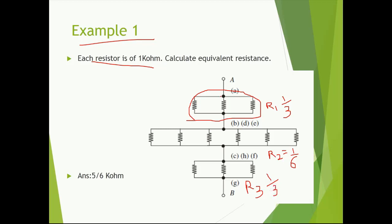Now this equivalent resistor is in series with this equivalent resistor, which is in series with this equivalent resistor — that is, R1 is in series with R2 is in series with R3. That is 1 over 3 plus 1 over 6 plus 1 over 3, so the answer comes out to be 5 over 6 kilo ohm.